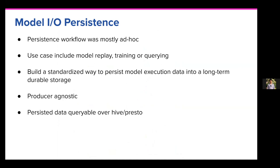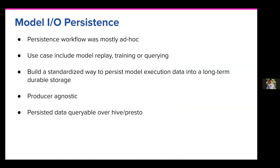Another use case is model IO persistence. Within Lyft, model execution pipelines run in our ecosystem that persist input, intermediate outputs, and results of the model execution to S3. The data is used for model replay for debugging, model retraining for special events, or ad hoc querying. The persistence workflow has historically been ad hoc, where each model execution pipeline implemented its own S3 tier, with varying producers including Beam pipelines and Python workers. This served as a perfect use case for our near real-time persistence framework, by providing a standardized way to persist model execution data — both input and output — into long-term durable storage, so that it can be queried in near real-time.